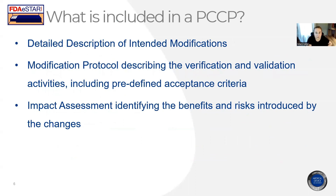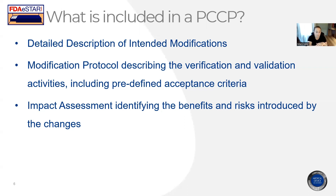What are the basic elements of what needs to be included in a PCCP? The first is a detailed description of the intended modifications — listing all the specific changes, what those changes are, and why those changes are appropriate. You will also identify whether it's a locked or adaptive algorithm. The next element is the modification protocol, which describes the verification and validation activities including predefined acceptance criteria for these changes. This is perhaps the most important part, because the FDA needs to buy in and ensure that your testing will support those changes and claims — they are pre-evaluating your testing so that as long as you meet everything outlined in the PCCP, the FDA is confident it will support your modifications.